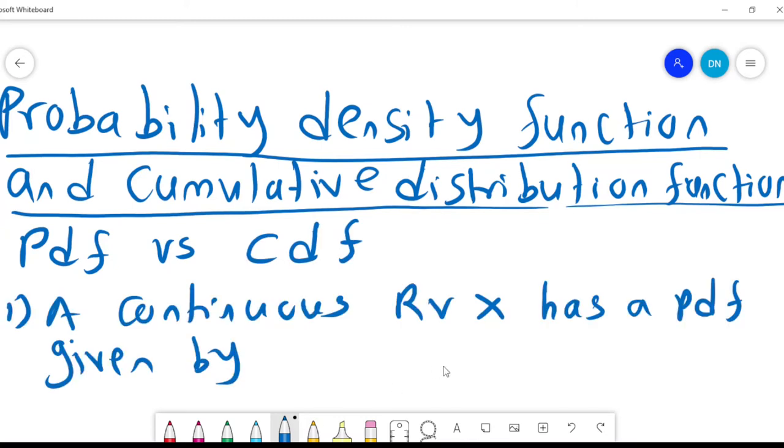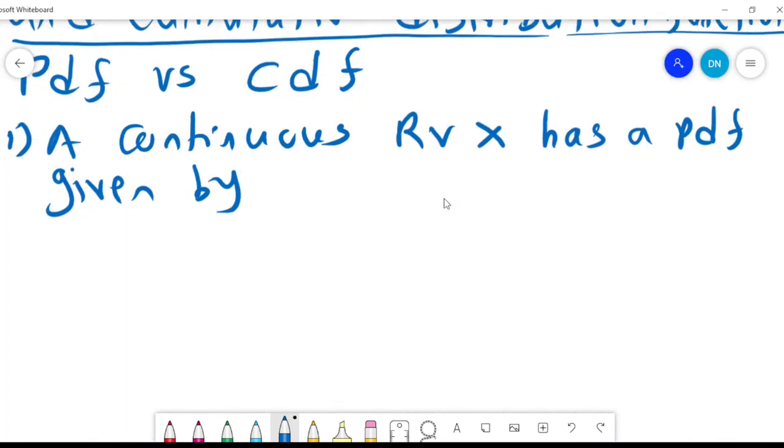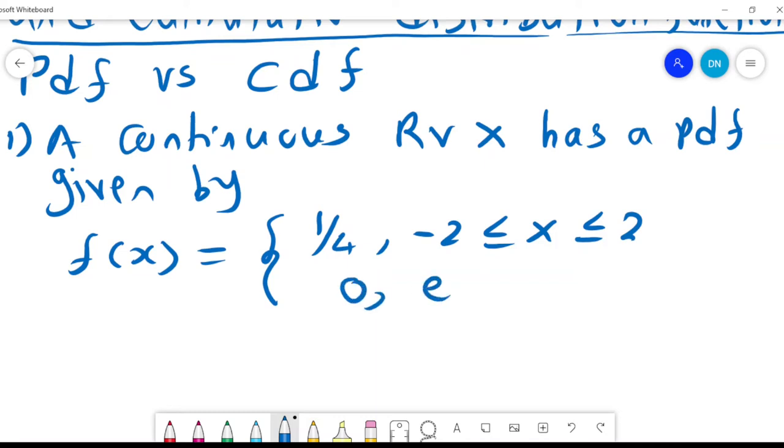A continuous random variable X has a PDF that is given by f(x) equals to a quarter when X lies between negative 2 and 2, and it's 0 elsewhere.